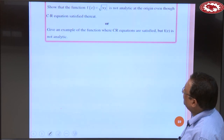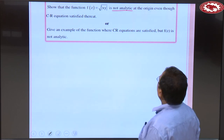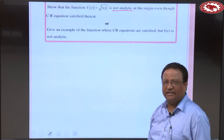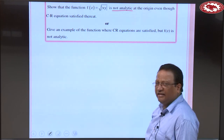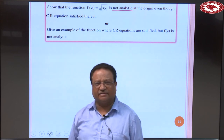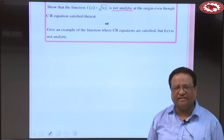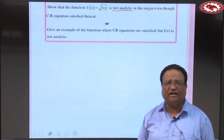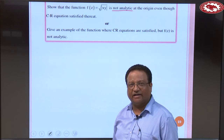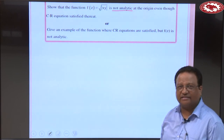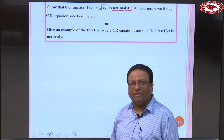Next problem: Show that f(z) = √|xy| is not analytic at the origin even though CR equations are satisfied there. Here f(z) = u + iv with u = √|xy| and v = 0. At the origin, calculating ∂u/∂x by definition gives 0, similarly ∂u/∂y = 0, ∂v/∂x = 0, and ∂v/∂y = 0. So CR equations are satisfied.